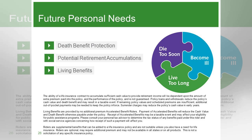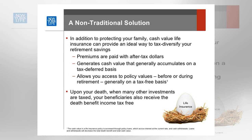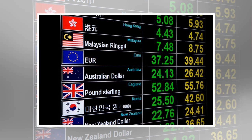In the same way that a mortgage payment is divided into principal equity and interest — the cost of the loan — the premium payment for a properly designed permanent life policy is divided into cash value equity and the cost of insurance, paying for the actual death benefit. In addition to your own money, the insurance company typically credits your policy with interest or dividends each year, so the cash value grows over time.